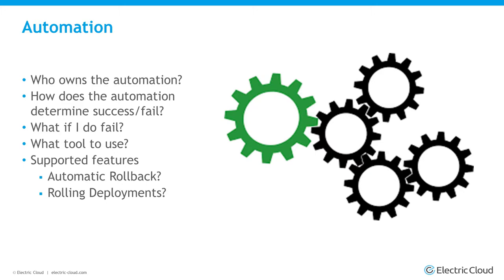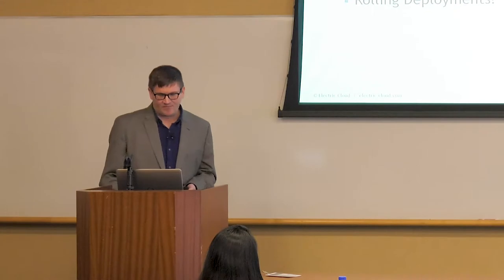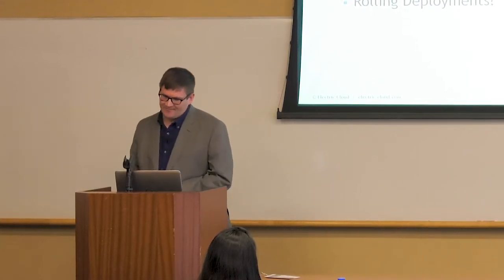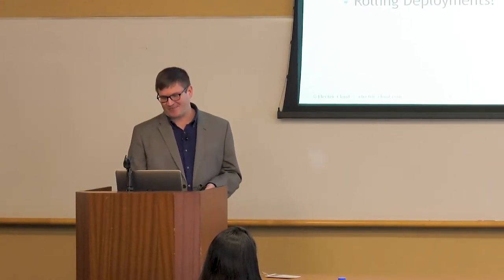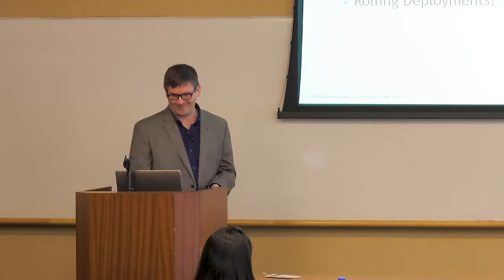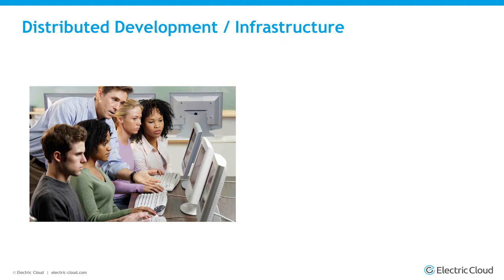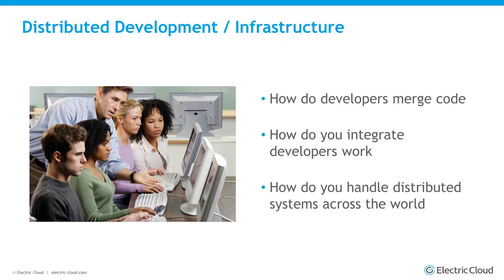You have to consider who's going to own the automation — does the database team own it, does the release manager own it? How does the automation determine if something was successful or failed? What tools should you use? Consider tools that have automated rollback and rolling deployments, because they become key and critical. Also consider how developers merge code, and treat the database like an actual application rather than a separate thing.